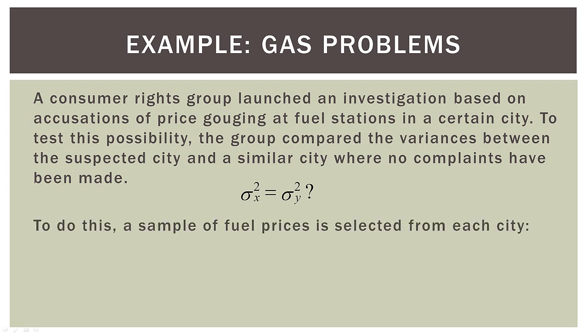So to do this, a sample of fuel prices is selected from each city. So for sample one, we have a sample size of 10. The average price of fuel, and I will assume this is here in the US, is around $3.42. Our sample variance was 0.0096, and our sample standard deviation was 0.0980.